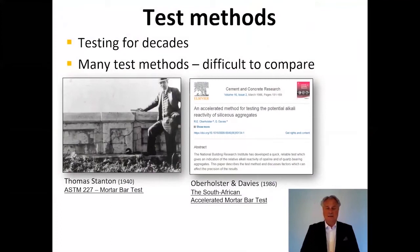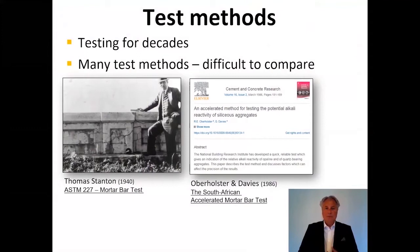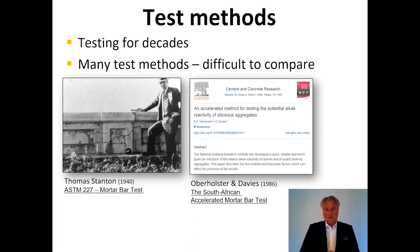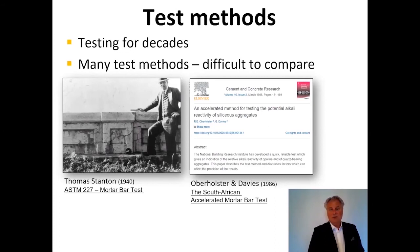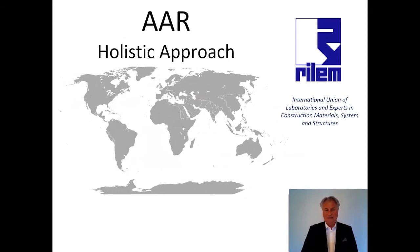It was Thomas Stanton back in the 1940s in California who first realized these mechanisms. He did great work and introduced test methods, including a mortar bar test that later became ASTM 227. Different countries then started to develop different test methods. In 1986, Oberholster and Davids in South Africa developed the South African accelerated mortar bar test. Many different test methods were developed in different countries, making it difficult to compare results.